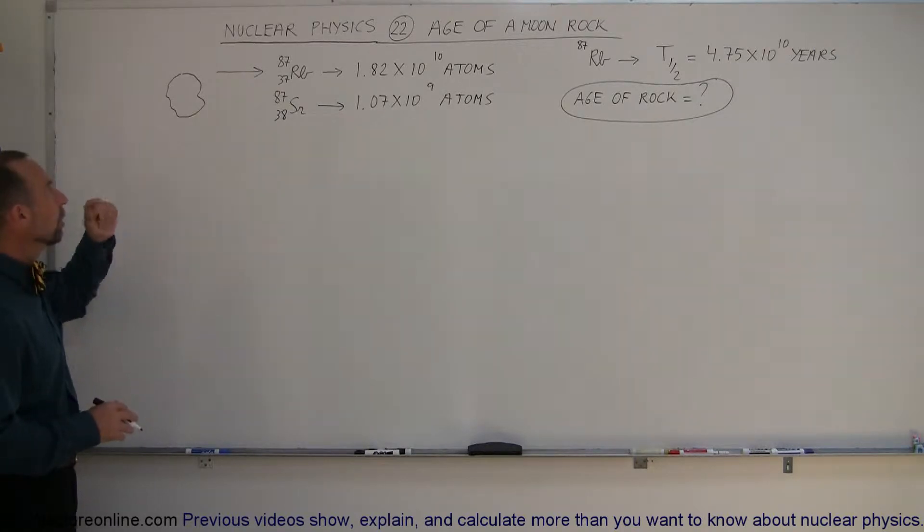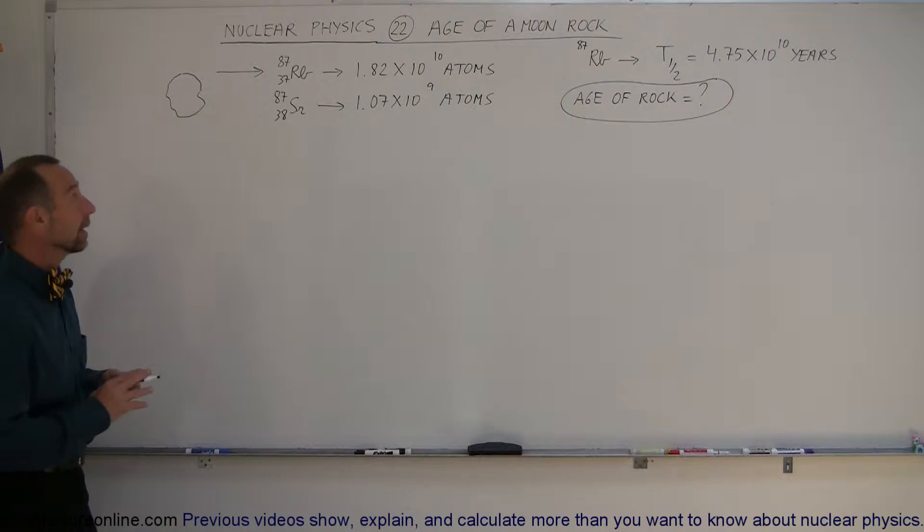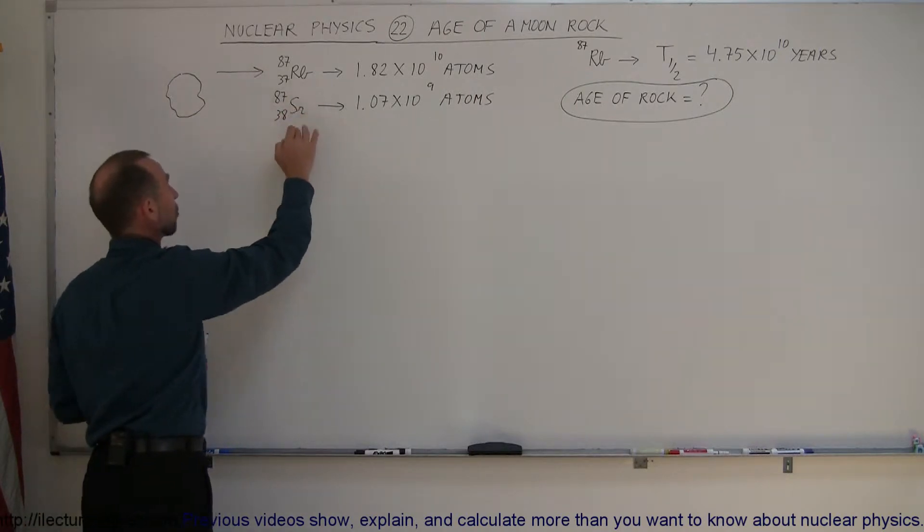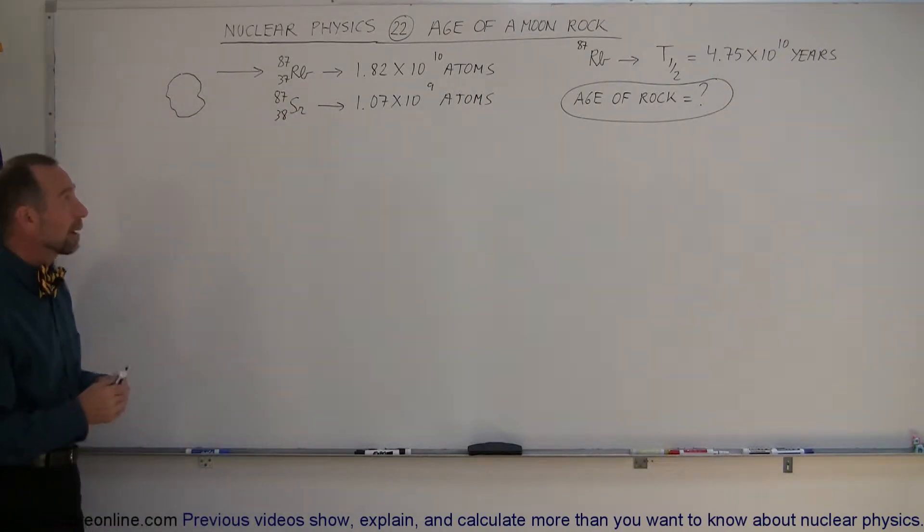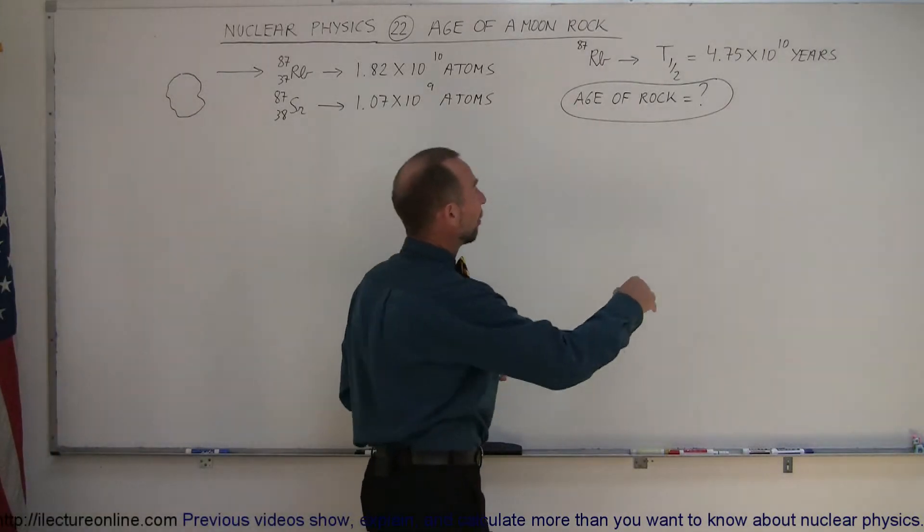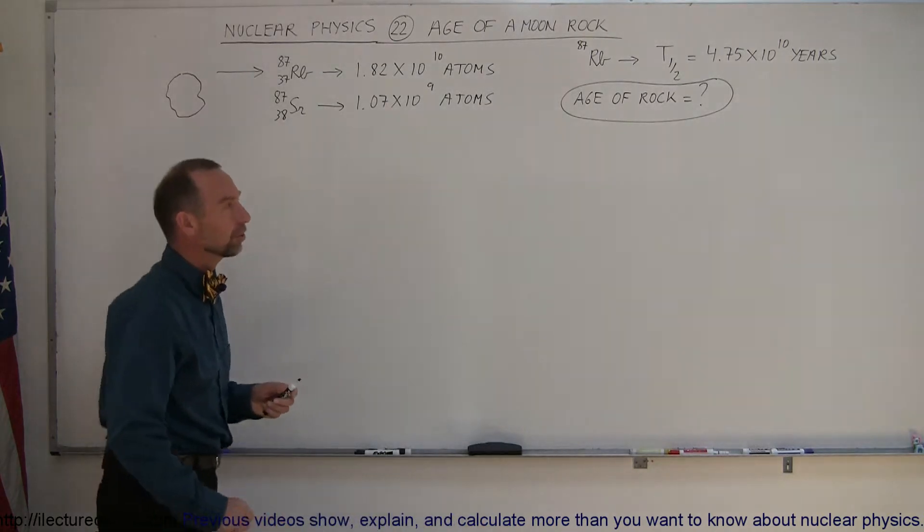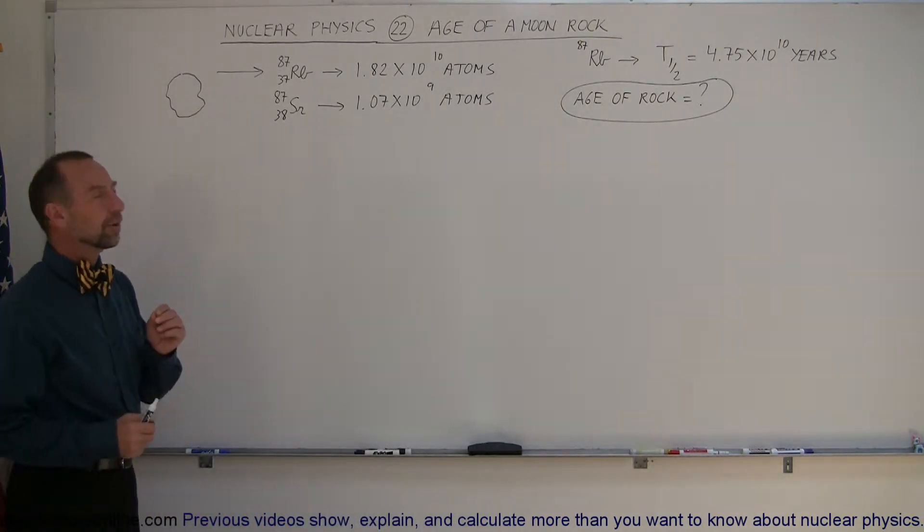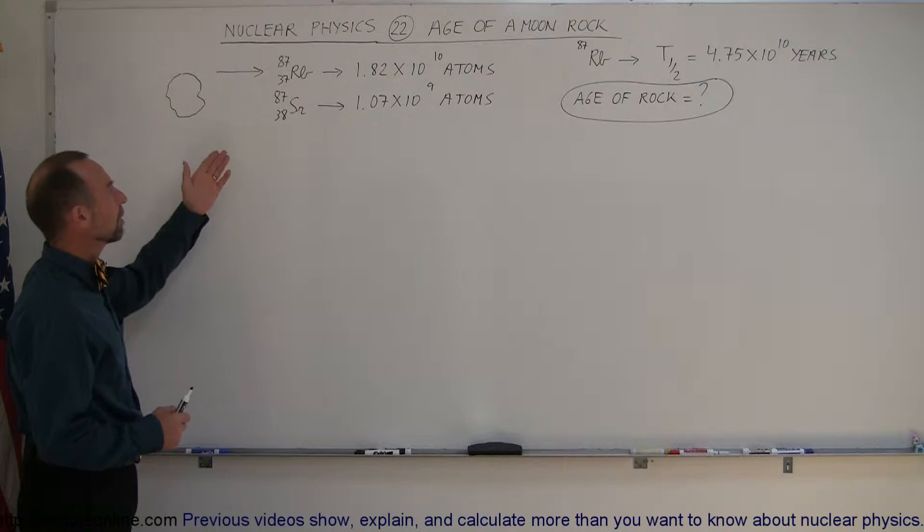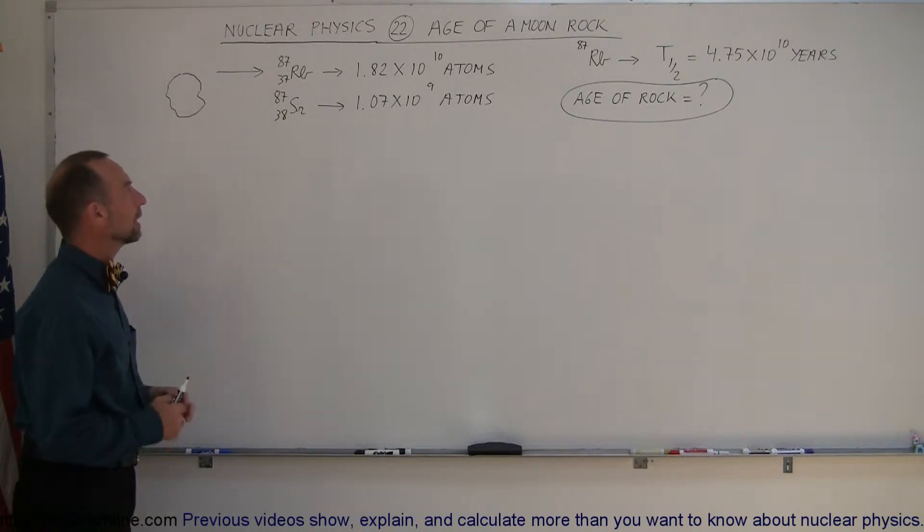Let's say we had a moon rock and it was chemically analyzed to contain some rubidium and some strontium. It turns out that rubidium is a radioactive element. It undergoes beta decay. It has a half-life, a very long half-life of 47.5 billion years. So it very slowly decays from rubidium into strontium through beta decay. So one of the neutrons turns into a proton.